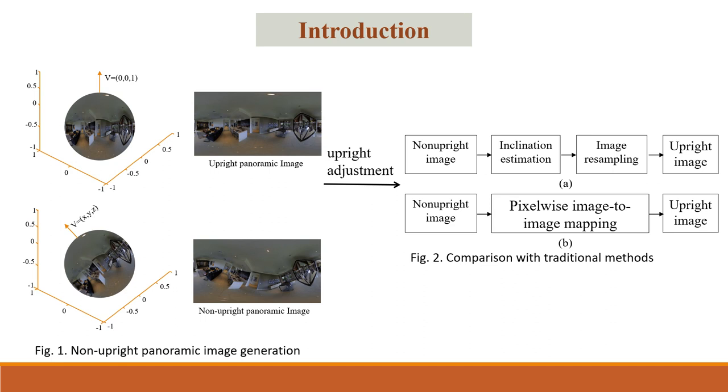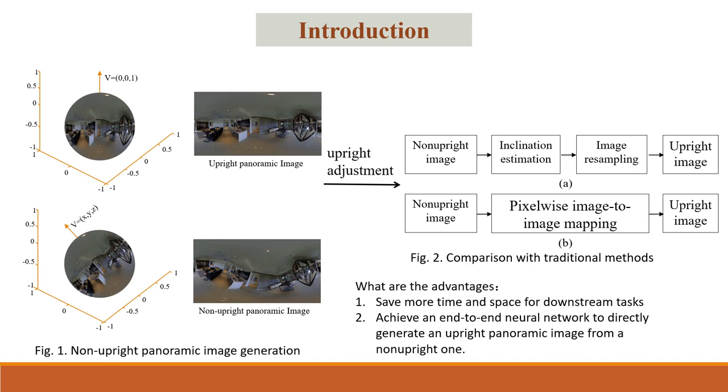Unlike previous approaches, which predict tilt angles first and then adjust images through resampling, we propose a novel pixel-level mapping method that integrates angle prediction and resampling into a single process for image adjustment. Our method achieves an end-to-end neural network to directly generate an upright panoramic image from a non-upright one, saving more time and space for downstream tasks.